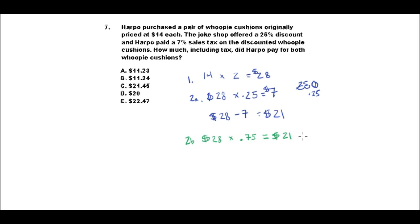So if you take 28 times .75, I'll just tell you it's 21. So I'm going to call this 2b, and this is just another way to do it. So notice that we skipped an entire step. By multiplying it by .75, instead of multiplying it first by .25 and then subtracting that answer from the original price, we save time.